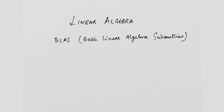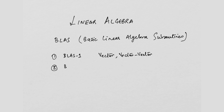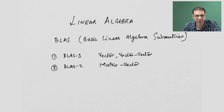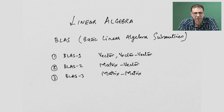The first category is called BLAS level 1. This is essentially vector-vector kind of operations, like scaling a vector, finding the Euclidean norm, or computing the dot product of two vectors. BLAS level 2 primarily constitutes matrix-vector operations — finding the product of a matrix and a vector, triangular solve, and so on. The third category is matrix-matrix operations, and the simplest example is matrix multiply — multiplying two matrices and getting the result.